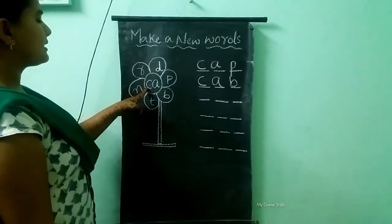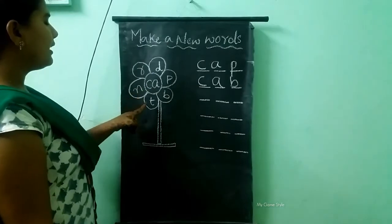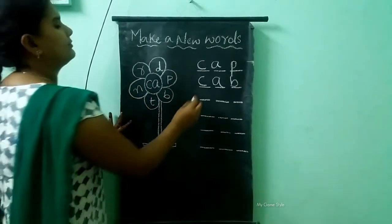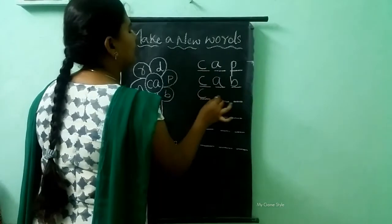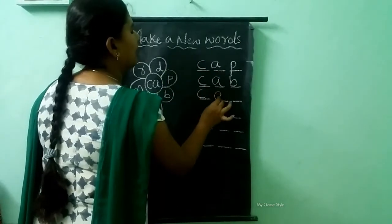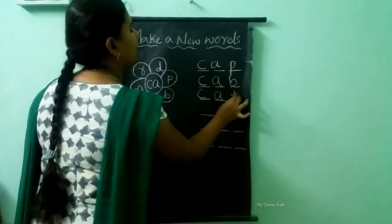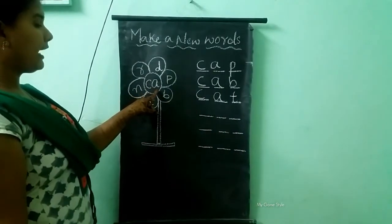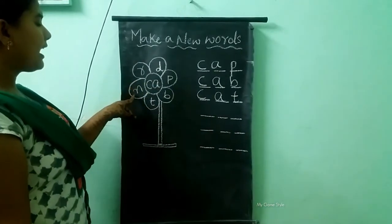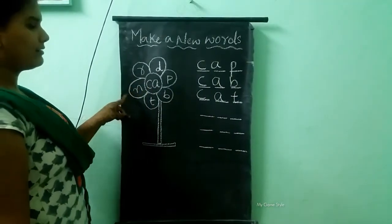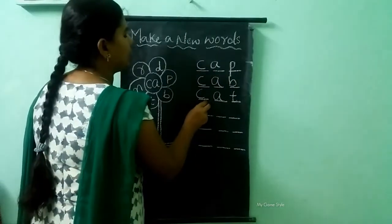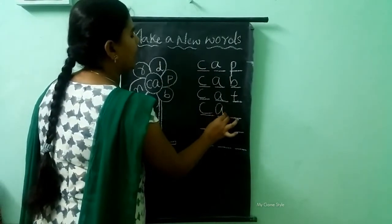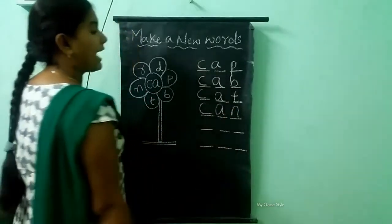Next C A T, Cat. C A N, Can. Here we need to write C A N, Can.